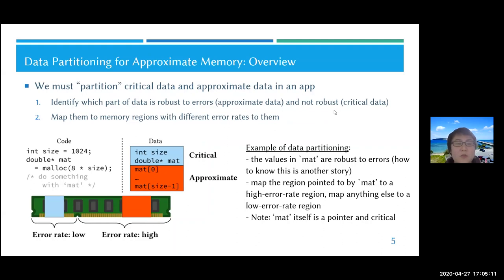First, we have to identify which part of data in an application is robust to errors, which is another big research question. In this particular talk, we assume that we can somehow do it. Then in the second step, we have to map the two types of data to different memory regions that have different error rates.